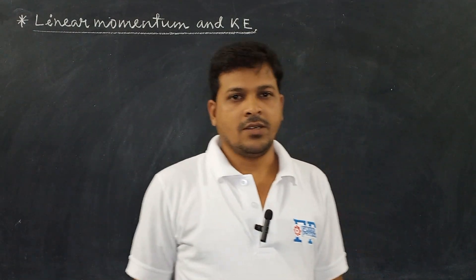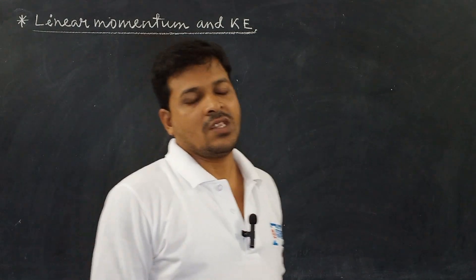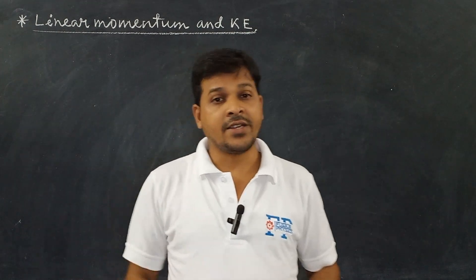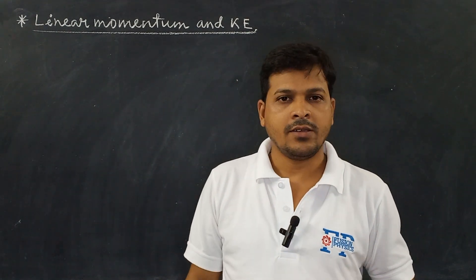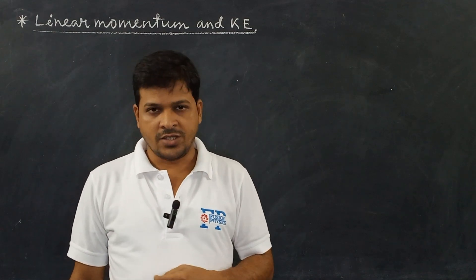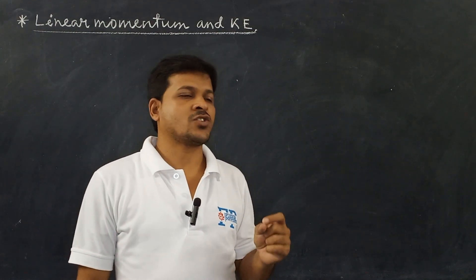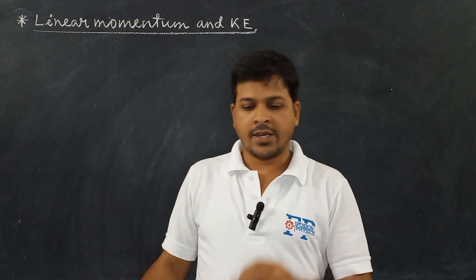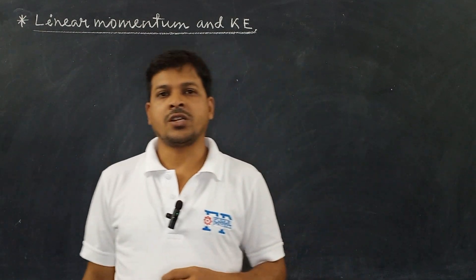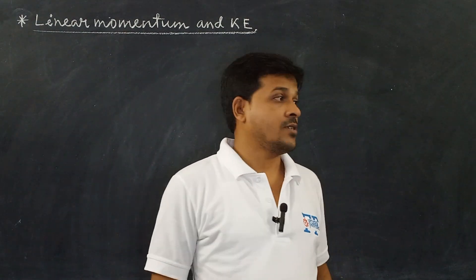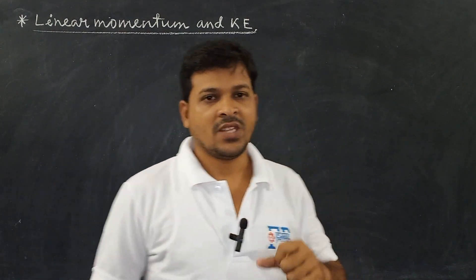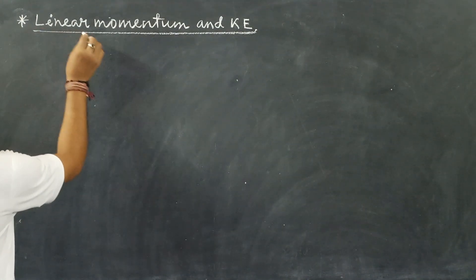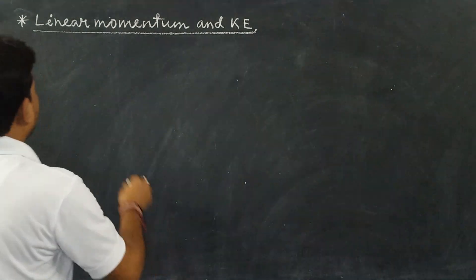Hi friends. In the last video we learned up to the derivation of kinetic energy equal half mv square, and potential energy equal mgh for a body of mass m moving with velocity u in case of kinetic energy, and raised through height h in case of potential energy. Now we are going to learn another very important relation to solve numerical problems — that is the relation between linear momentum and kinetic energy.